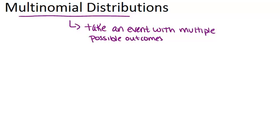In this video, we are going to learn about multinomial distributions. In order to get a multinomial distribution, you need to start with an event that has multiple possible outcomes, usually more than two. There does need to be a finite number of outcomes, though.